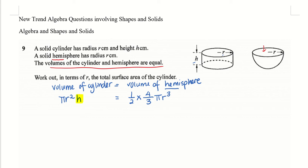I try to cancel common terms. I have pi — I can cancel pi. I have r squared — I can cancel r squared, leaving one r. Then I simplify to get 2 over 3. So this expression tells me that h equals 2/3 r.